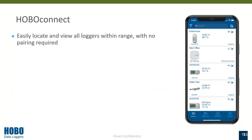With our Bluetooth data loggers, we have a free app called Hobo Connect. Within Hobo Connect, it easily allows you to locate and view all the loggers that are within range — a 100-foot line-of-sight range. You don't need to pair your device with our data logger. Our Bluetooth data loggers are constantly broadcasting their Bluetooth signal, so when you're in range within the app, you'll see them populate and can simply tap on the device you want to connect to.